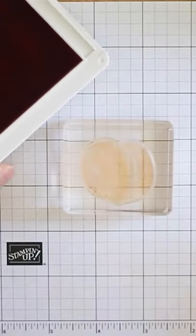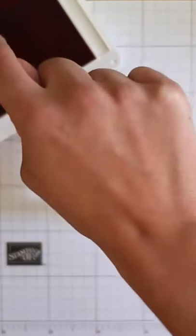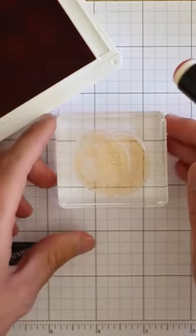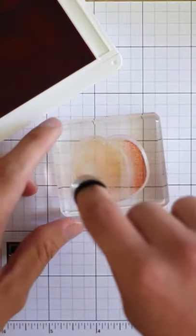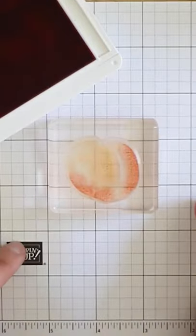Next, bring in your darker color and a sponge dauber. Ink up your sponge dauber and go ahead and add dimension right on top of your lighter color. This does not damage the ink at all.